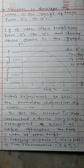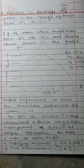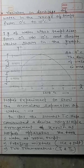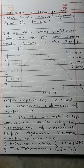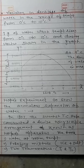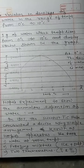Now, Hoppe's experiment — Hoppe's experiment to show the anomalous expansion of water. In 1805, the scientist T.C. Hoppe constructed a device known as Hoppe's apparatus using a simple arrangement. He used water at room temperature, a freezing mixture of ice and salt, and two thermometers.